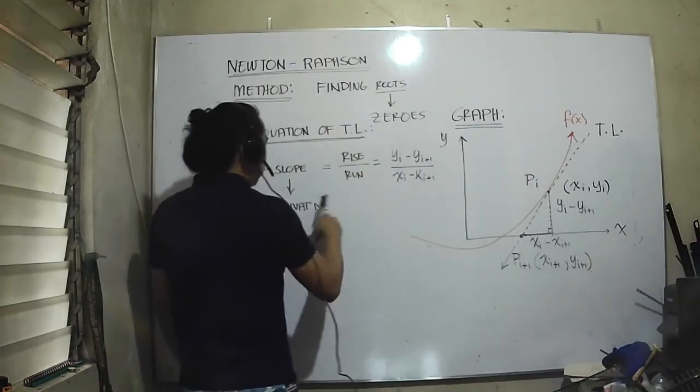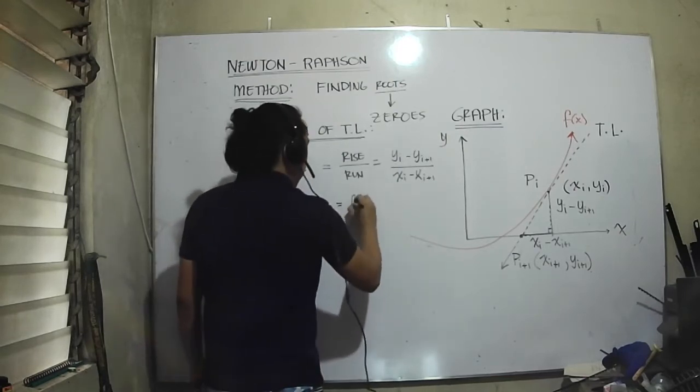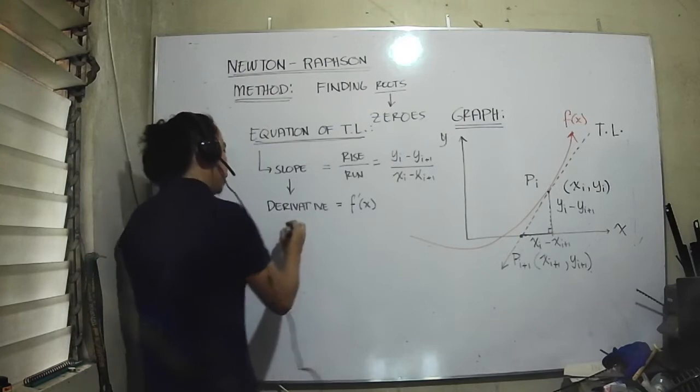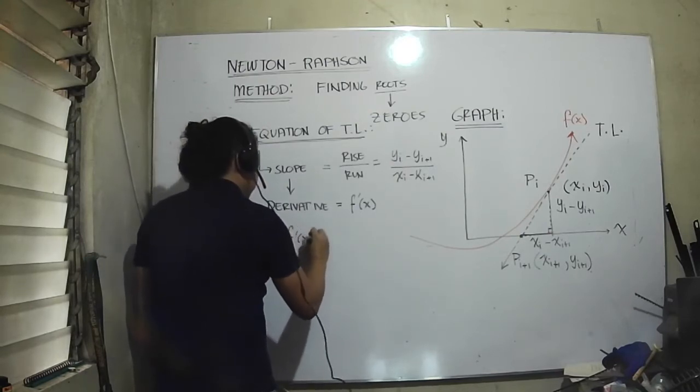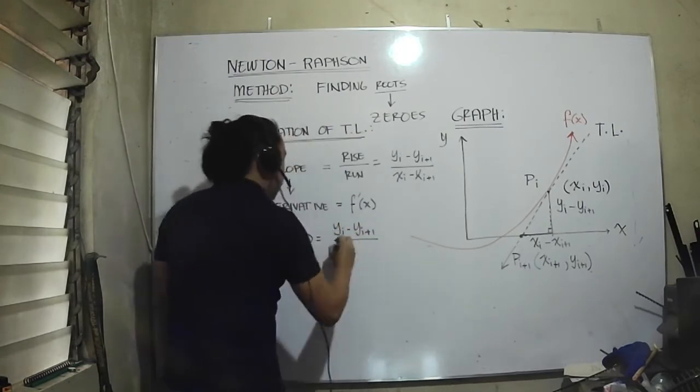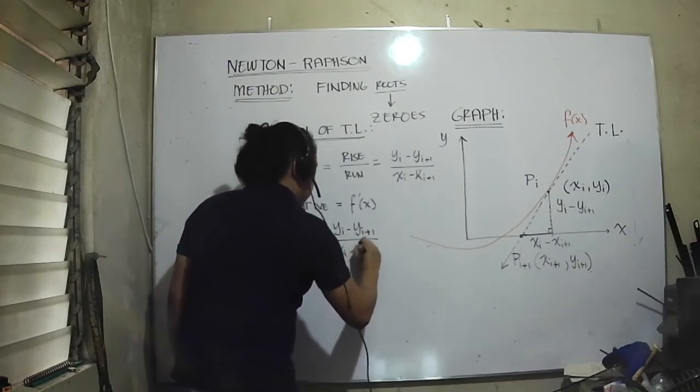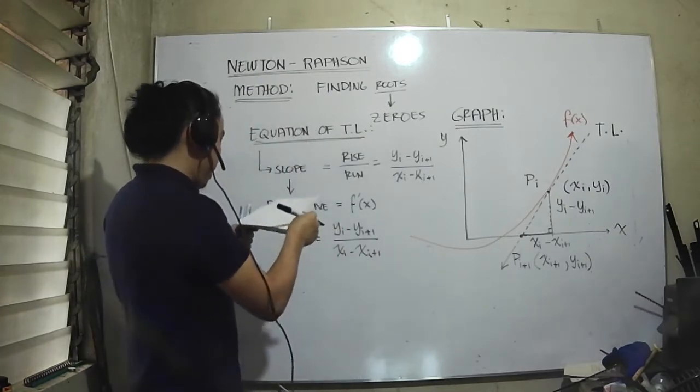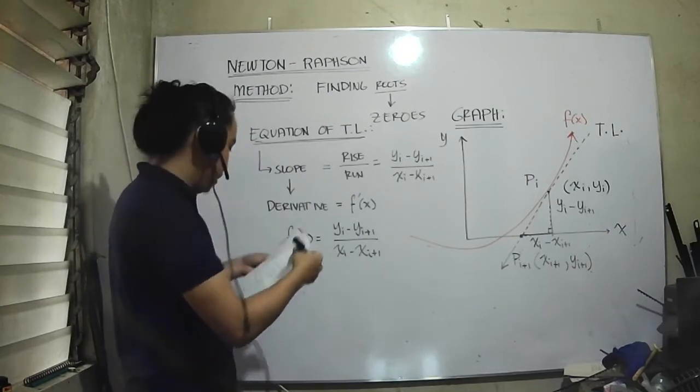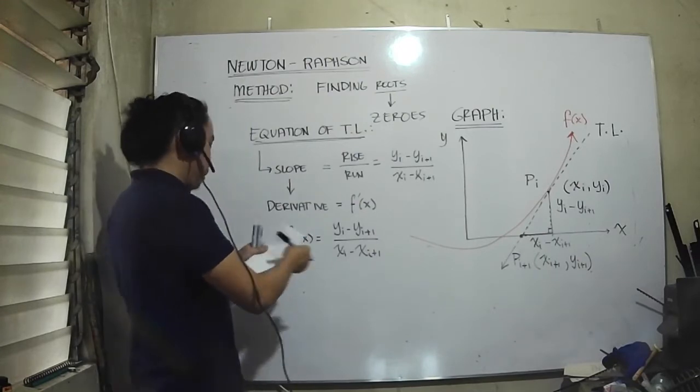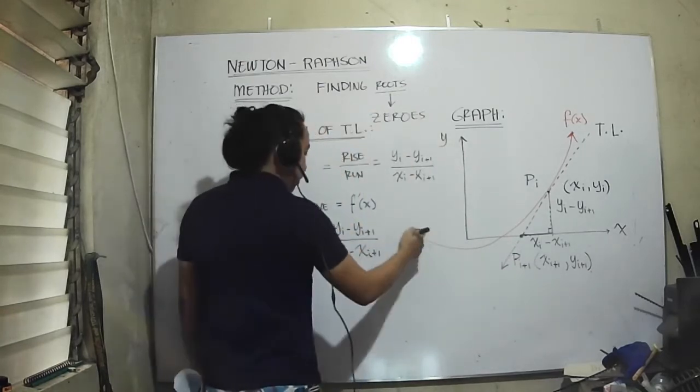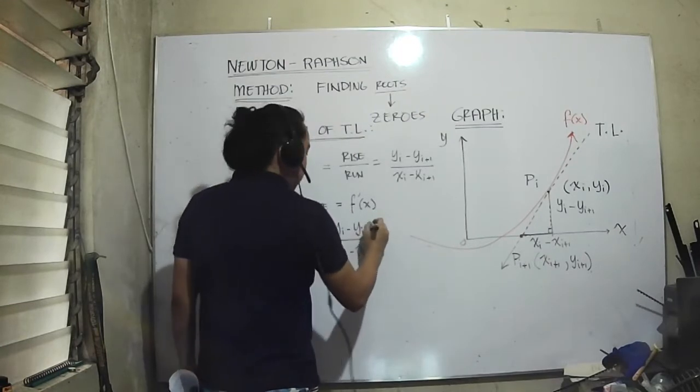The derivative is f of x prime. Rewriting this, the derivative equals (yi - yi+1) divided by (xi - xi+1). Let's try some further simplifications. Our value for yi+1, since it's on the x-axis, should be equal to zero.